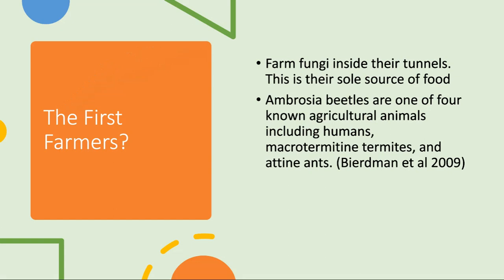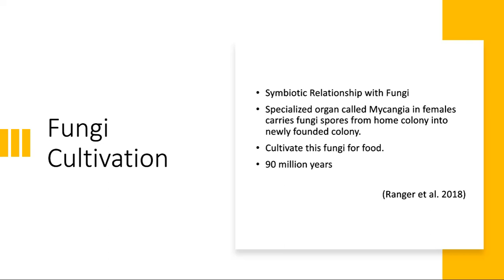A mycangia is a specialized organ used to carry fungal spores. This refers to the cultivation of fungi conducted by these organisms. Ambrosia beetles are one of only four known agricultural animals — the others being leafcutter ants, Macrotermitine termites, and humans. Austroplatypus incompertus has a symbiotic relationship with fungi, as do other ambrosia beetles. Only females have the mycangia organ, which carries spores from their birth colony into a newly established colony. The fungi then serves as the sole source of food for the colony. While humans began farming about 13,000 years ago, ambrosia beetles began farming 90 million years ago.